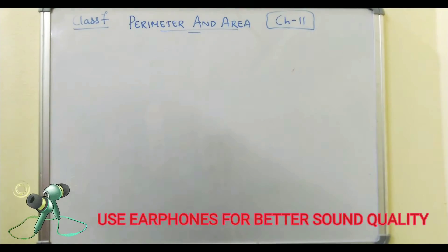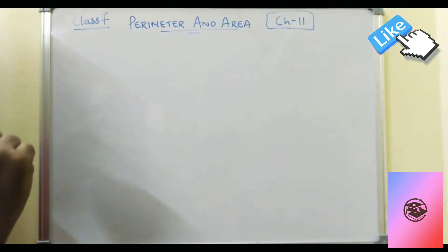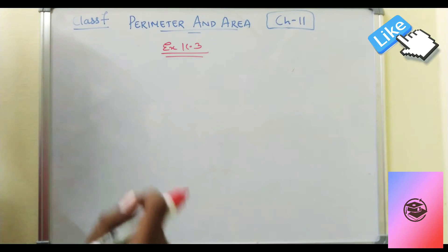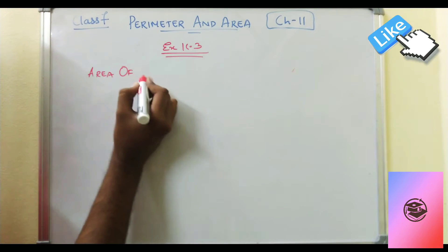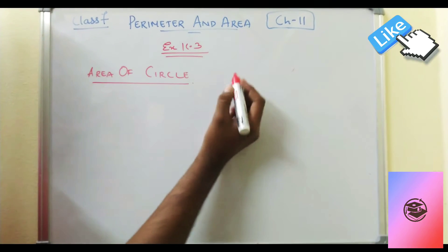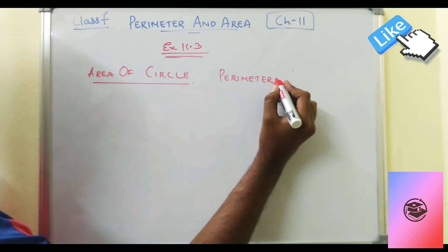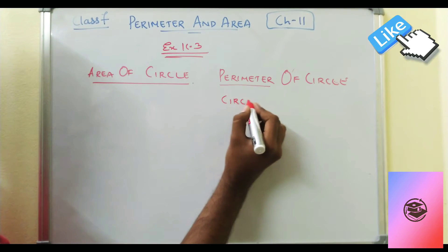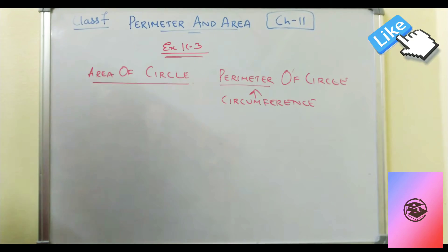Hello guys, welcome back. In this video session we'll be discussing Class 7th Chapter 11, Exercise 11.3. The topic is based on area of circle and perimeter of circle. In the questions, circumference will also be given — circumference is basically perimeter only. So for the circle, circumference means perimeter.